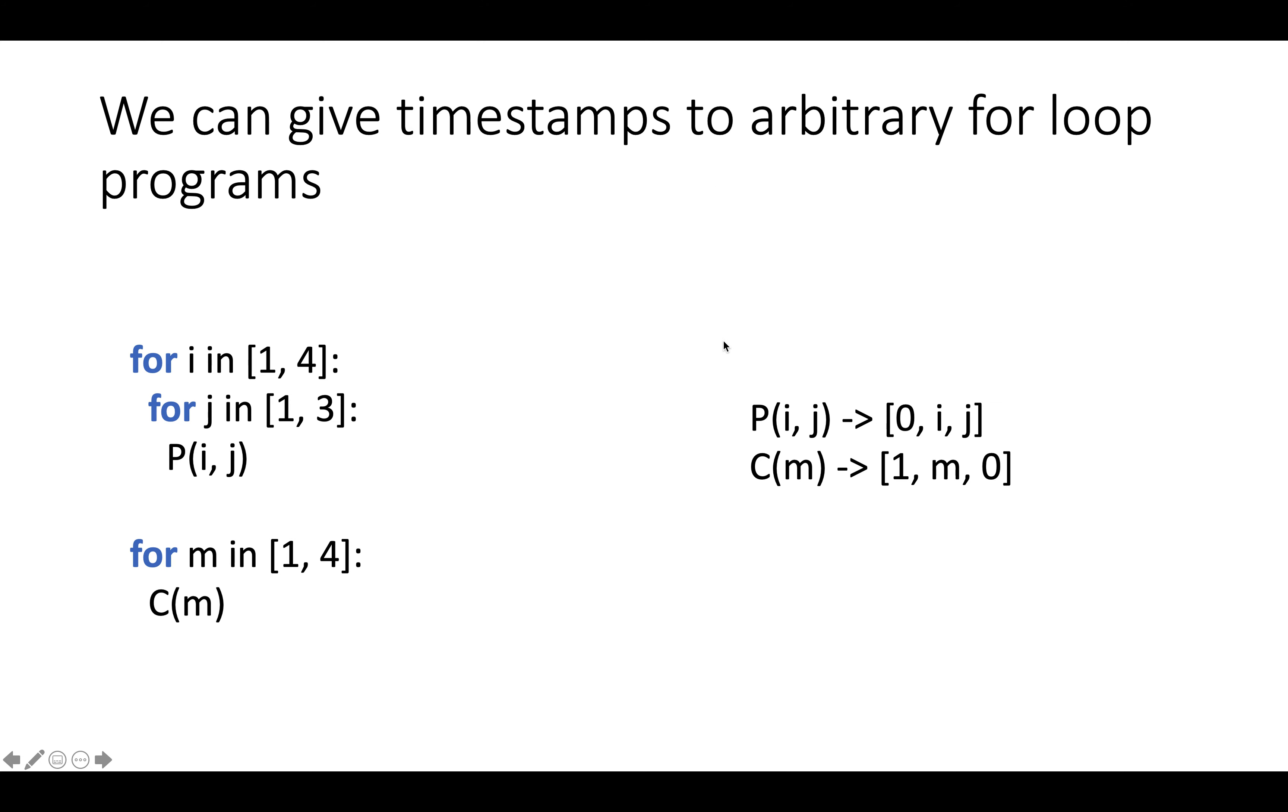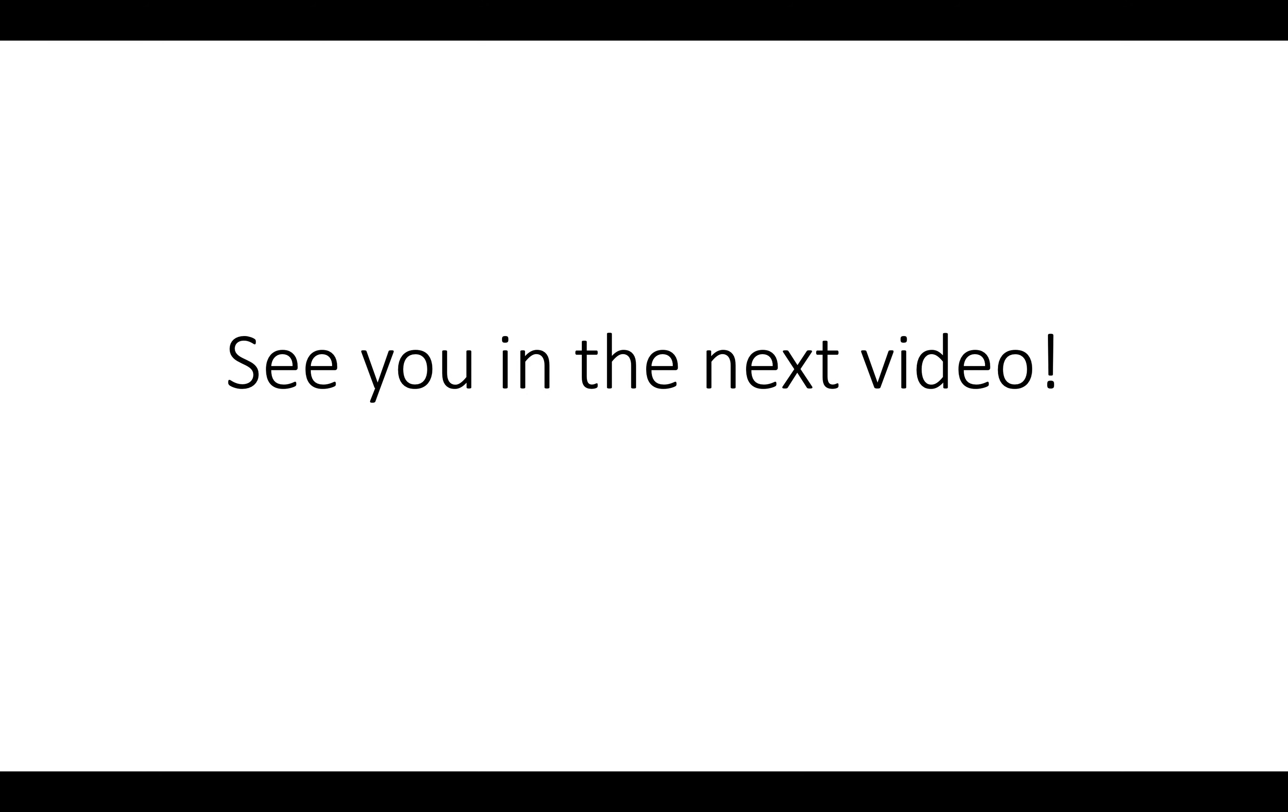So this is a nice way to give timestamps or vectors to every single statement in a program made up of for-loops. It's the beginning of pretty much all polyhedral analysis, and this order, lexicographic order, is a very important basic tool to understand if you're going to use polyhedral analysis. So hopefully that was helpful, and if it was, I look forward to seeing you in the next video.